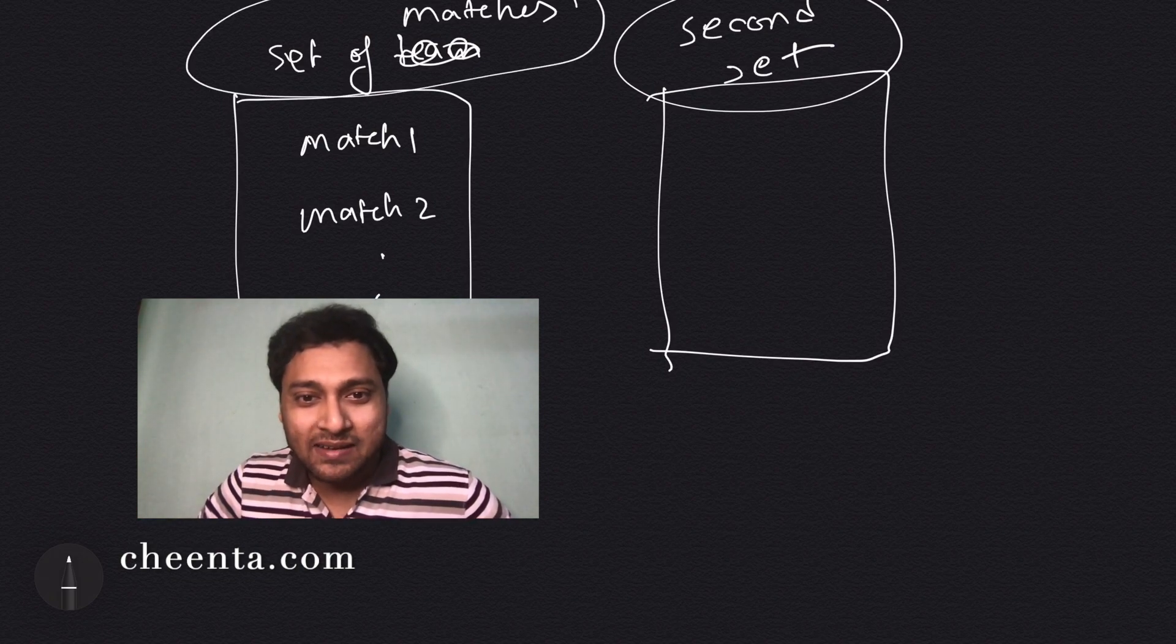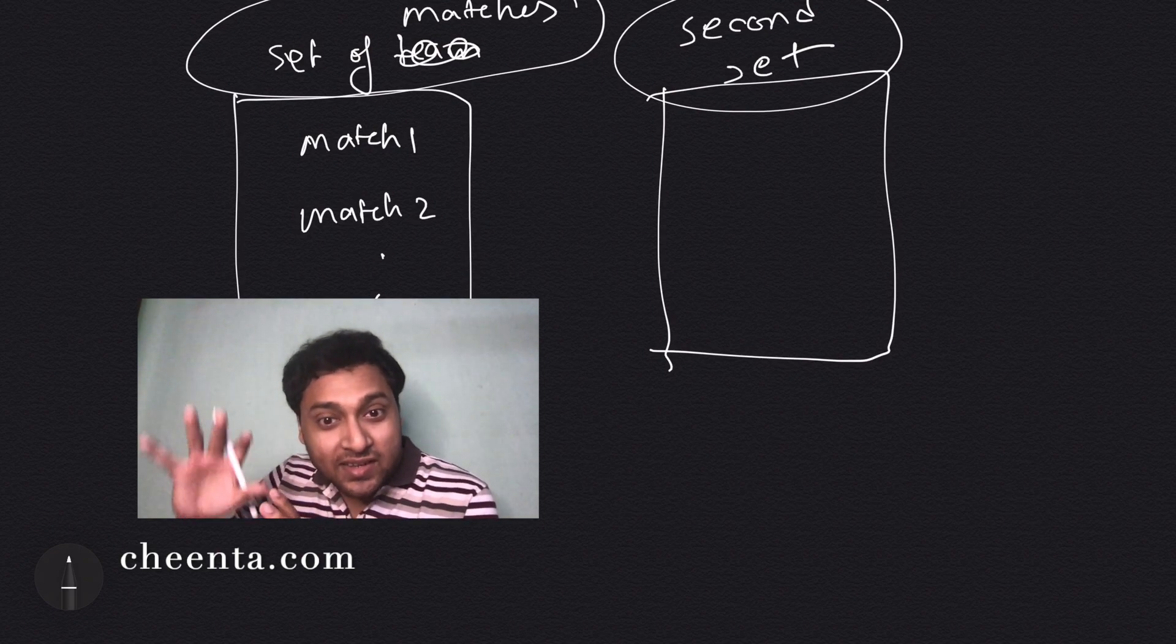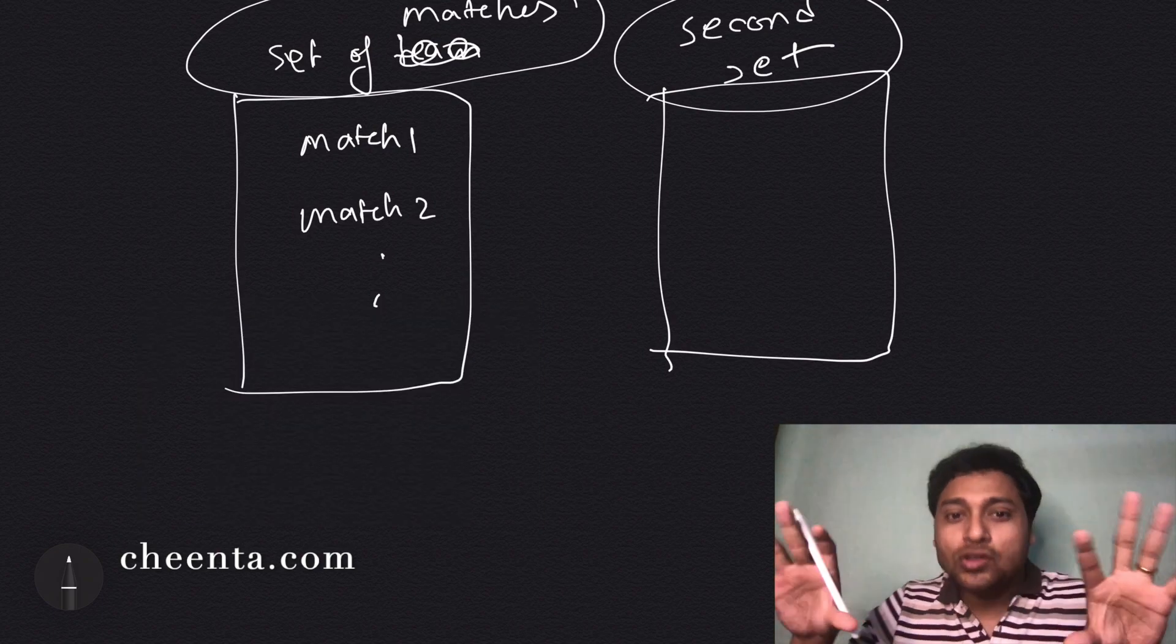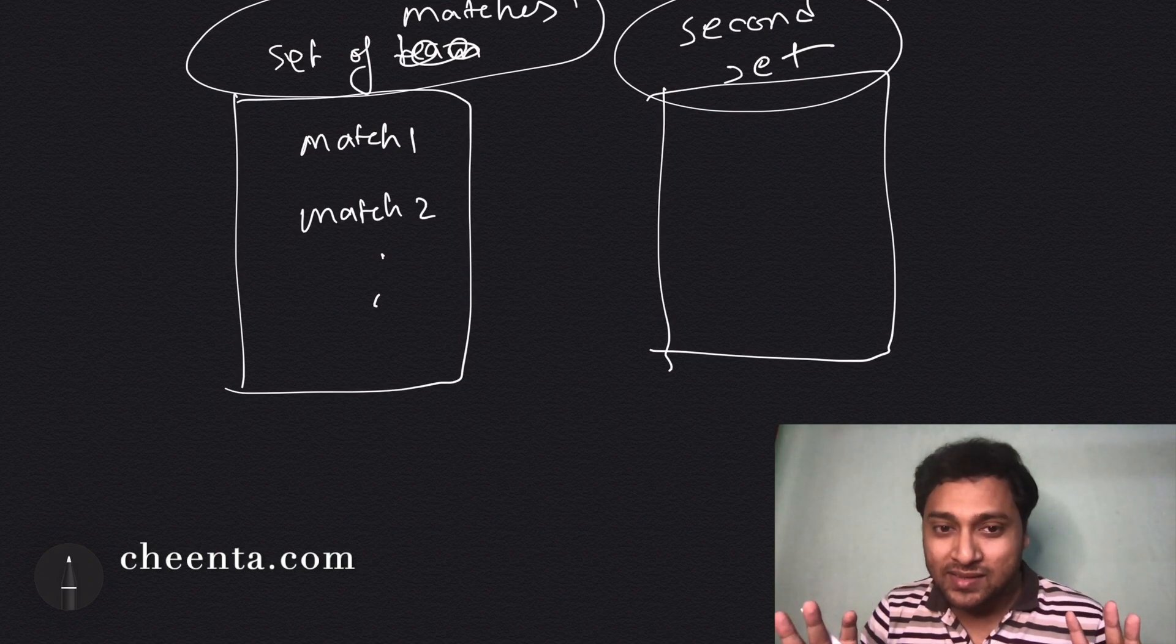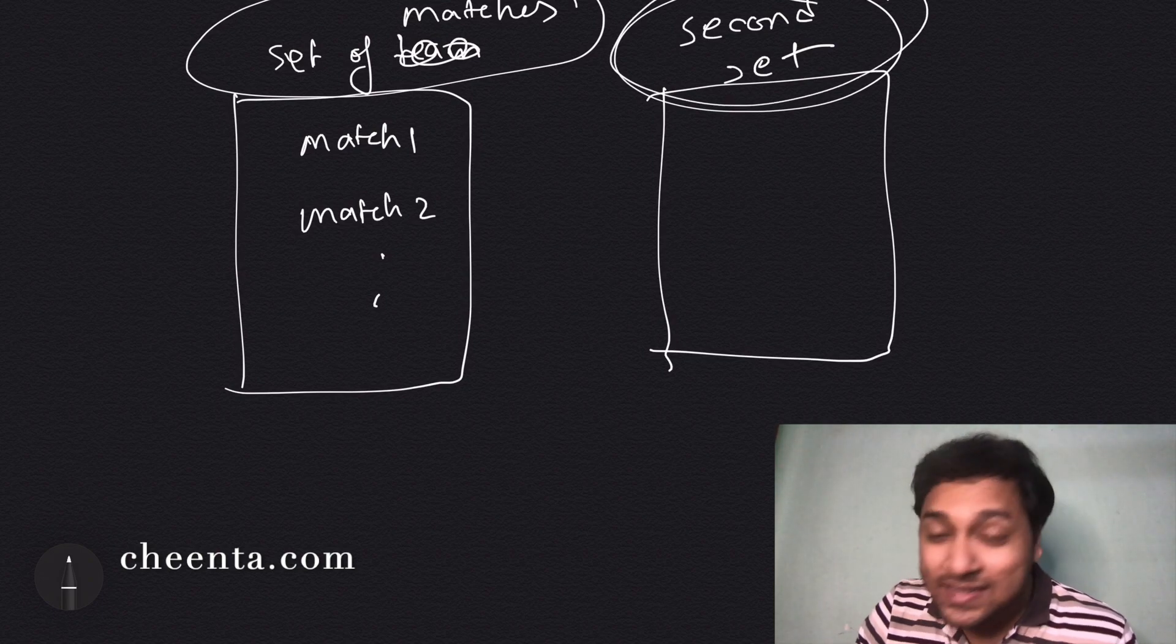If there is a bijection between the set of matches with that set, then both of them will have the same number of elements. So this mysterious second set, what is that?